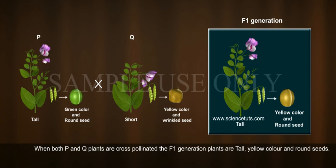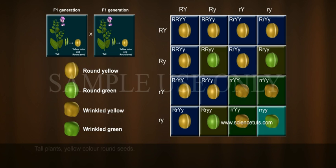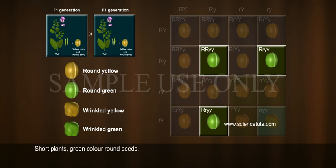When both pea plant P and Q are cross-pollinated, the F1 generation plants are tall, yellow color, and round seeds. Then the F1 generation plants are self-pollinated instead of cross-pollination. The progeny of F2 generation include some with tall plants, yellow color, round seeds, and some short plants.